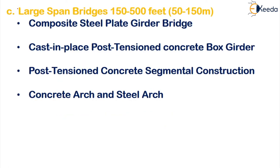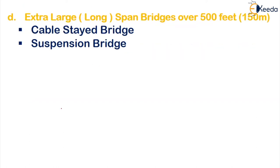Moving on to large span bridges, which are 150 to 500 feet or 50 to 150 meters. Examples are composite steel plate girder bridges, cast-in-place post-tensioned concrete bridge girders, post-tensioned concrete segmental construction, and concrete and steel arches. The extra large or long span bridges are over 500 feet or 150 meters — these are nothing but your cable-stayed bridges and suspension bridges.